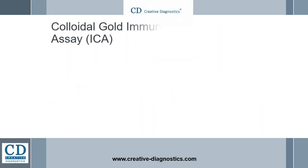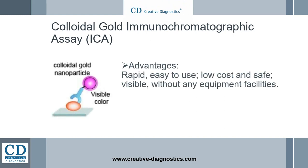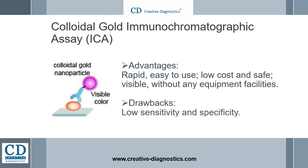Colloidal gold immunochromatographic assay (ICA), also known as lateral flow immunoassay, is a rapid test immunoassay to detect the presence or absence of a target analyte in a sample or matrix without the need for specialized and costly equipment.